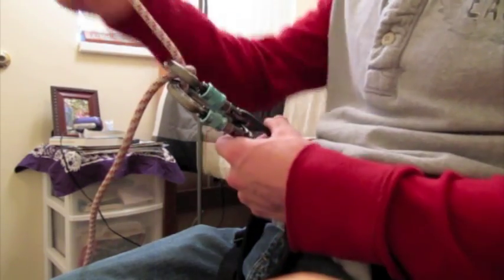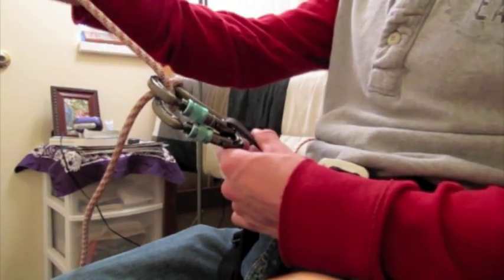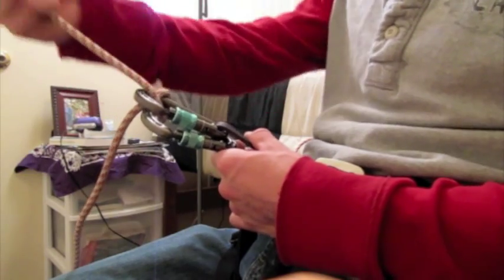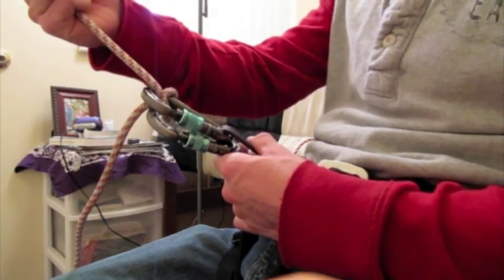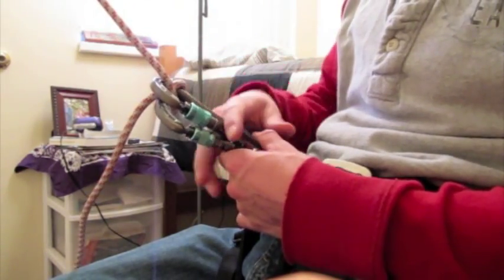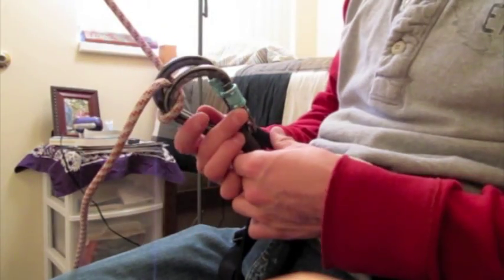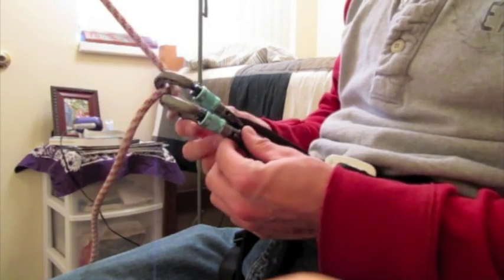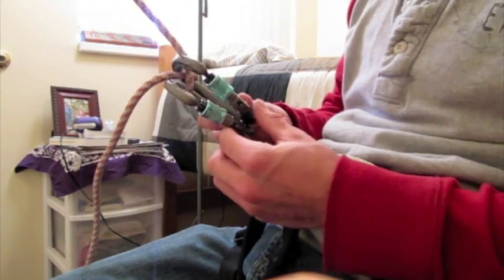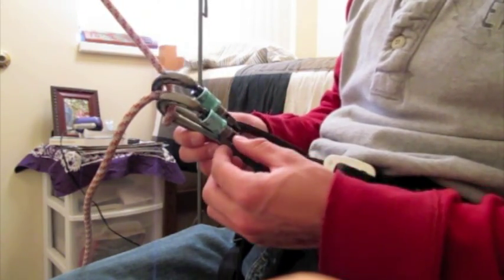You could rig a friction hitch, maybe like a VT above here, that you could pull down, take your weight off of this, and then descend with that knot. Again, this is just kind of the bare bones way to do it with gear that most people have.